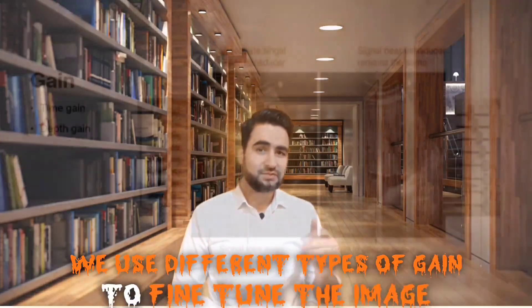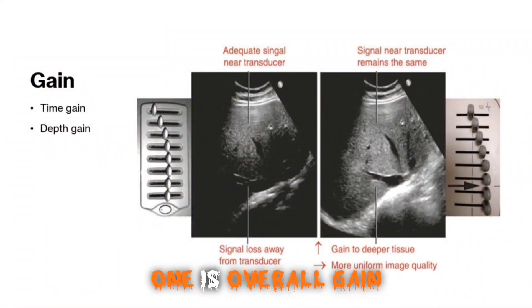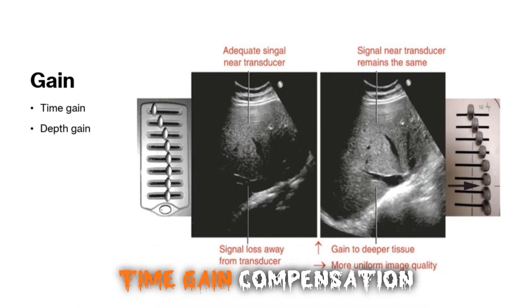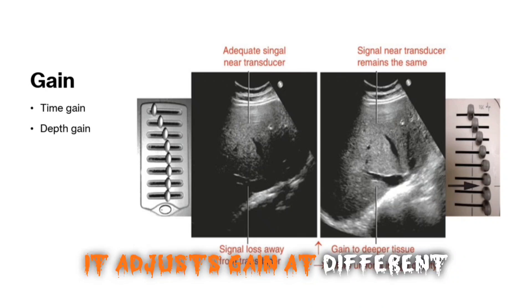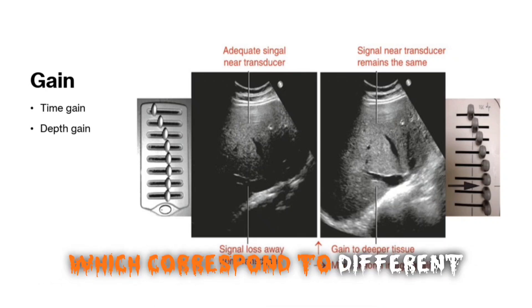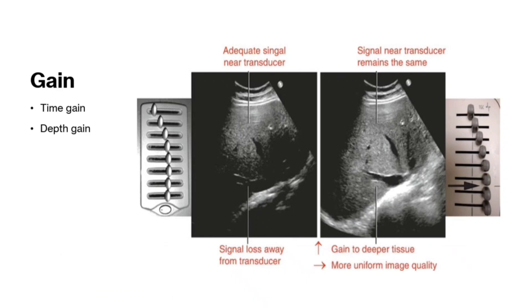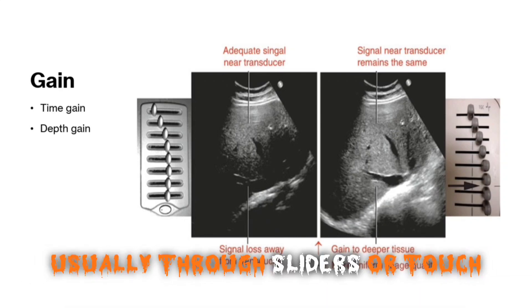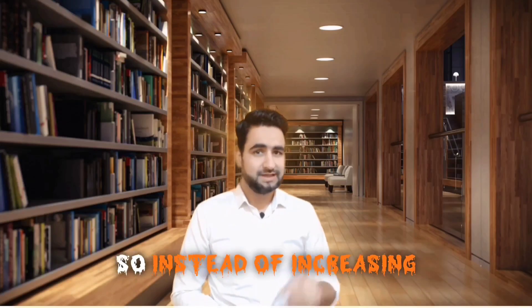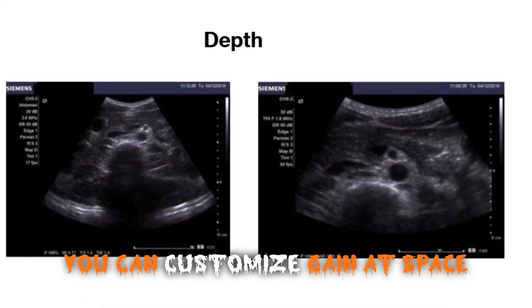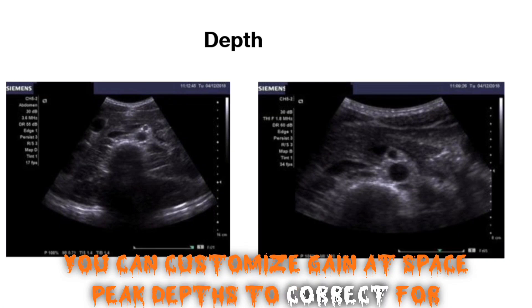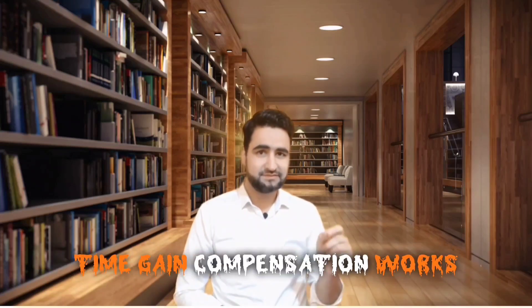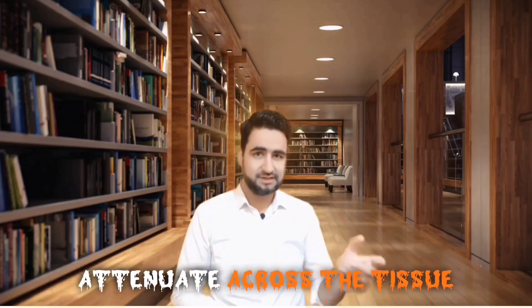In endoscopic ultrasound, we use different types of gain to fine-tune the image. Overall gain controls brightness across the entire image. Time gain compensation (TGC) adjusts gain at different time intervals, which correspond to different tissue depths. Depth gain compensation (DGC) adjusts gain at different image depths, usually through sliders or touch bars. Instead of increasing brightness everywhere, you can customize gain at specific depths to correct for signal loss due to attenuation as the wave travels deeper. TGC works because ultrasound waves attenuate as they pass through tissue.